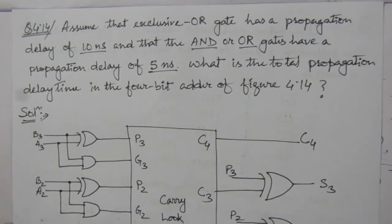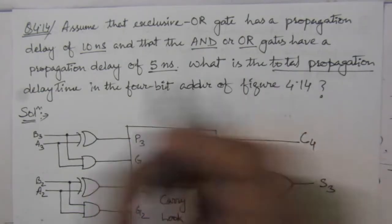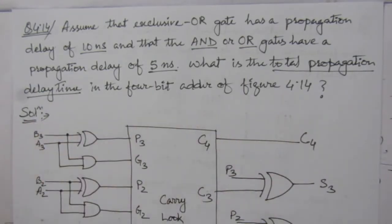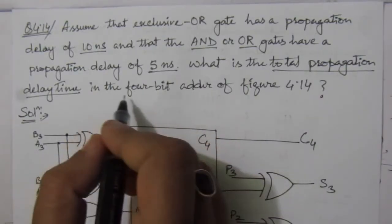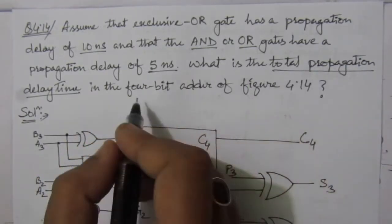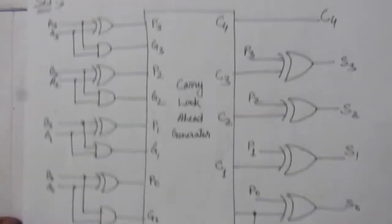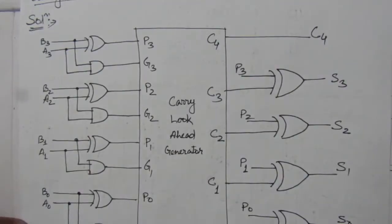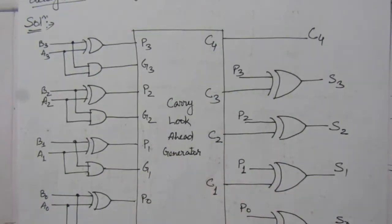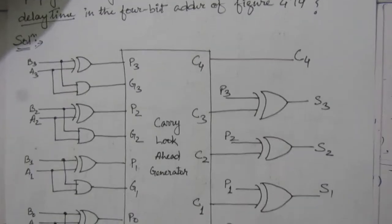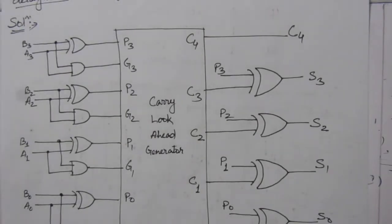We have to find out the total propagation delay, that means we have to find the longest path — the maximum time delay of the circuit. We are given that we have to find out the total propagation delay for the 4-bit adder in figure 4.14. This figure is for the 4-bit adder circuit with carry lookahead.